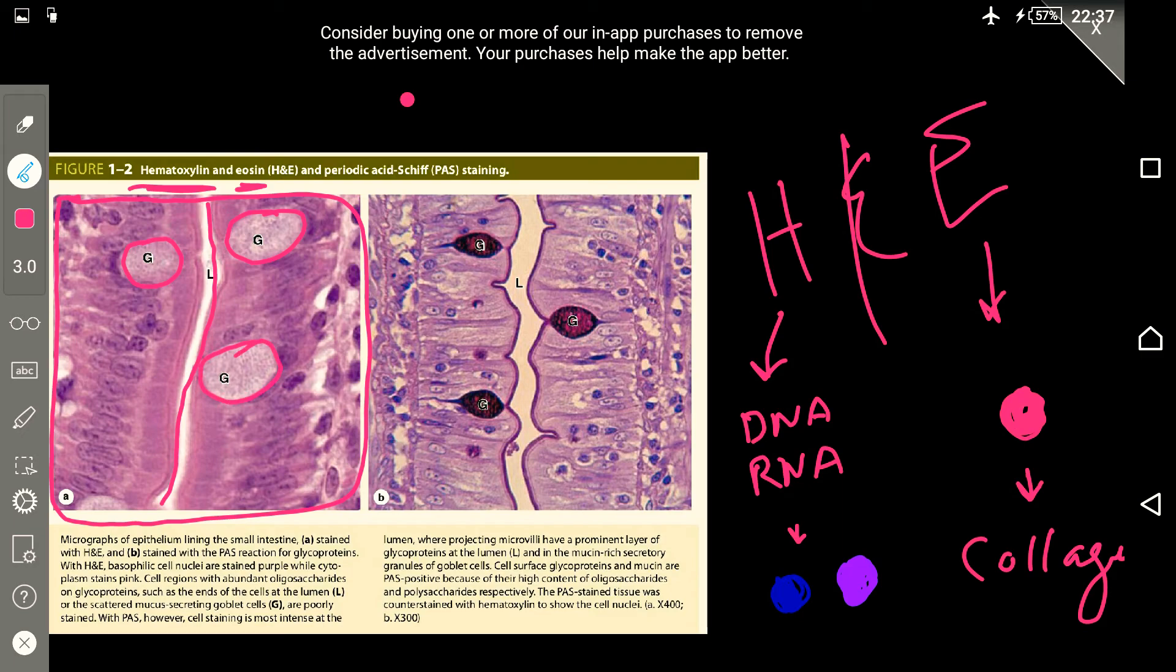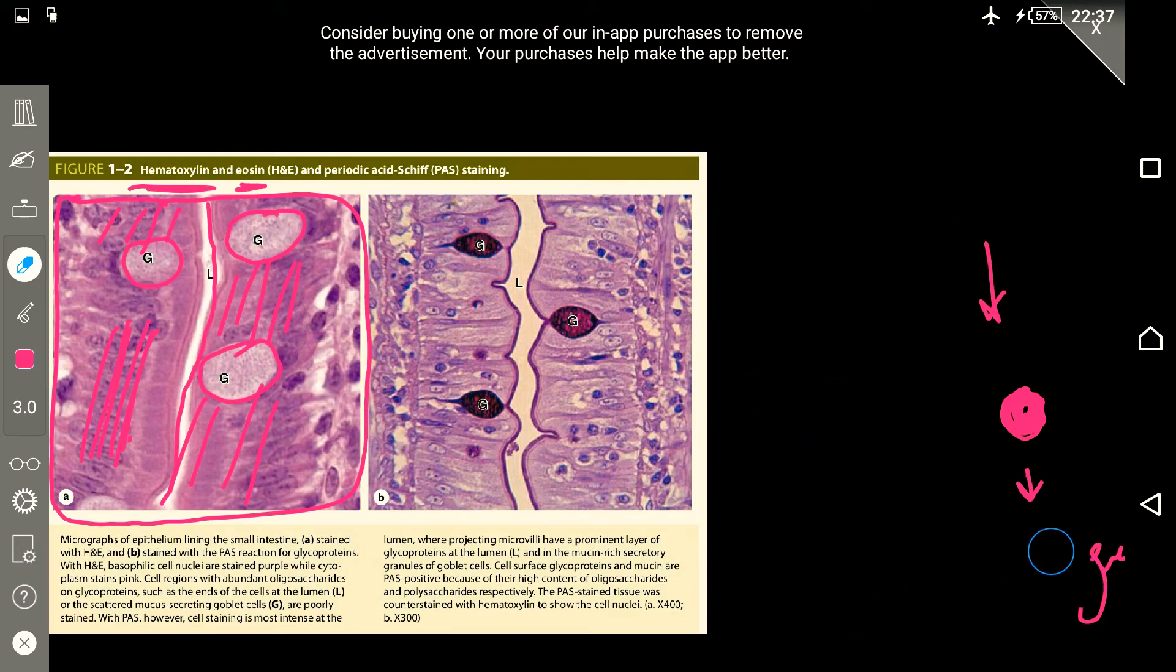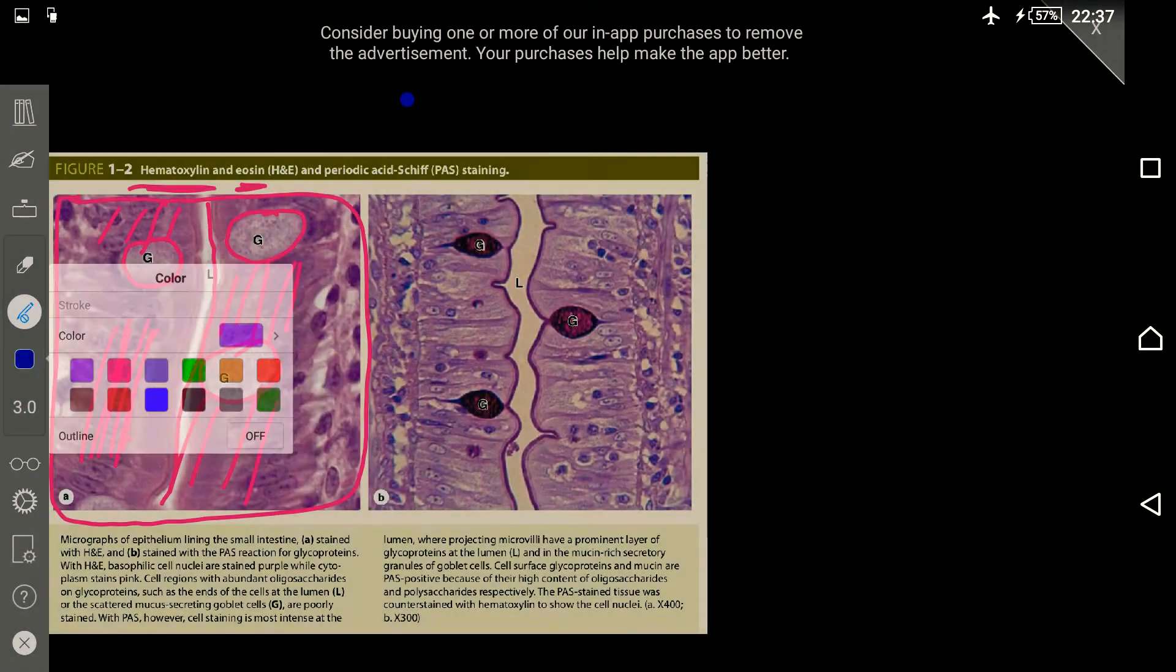G shows the goblet cells which are secretory cells, and also these other areas are the cells lining the walls of the intestine. This is the hematoxylene and eosin type of staining. We have another type or method of staining which is a little bit complex but is mostly used.